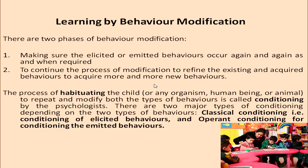There are two phases of behavior modification. First, making sure that the elicited or emitted behaviors occur again and again as and when required. Second, to continue the process of modification to refine the existing and acquired behaviors and to acquire more and more new behaviors. The process of habituating the child or any organism — human being or even an animal — to repeat and modify both types of behaviors is called conditioning.